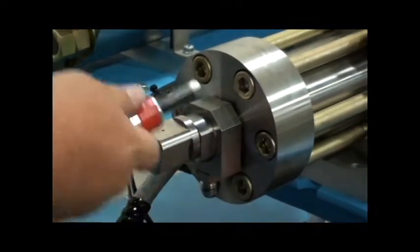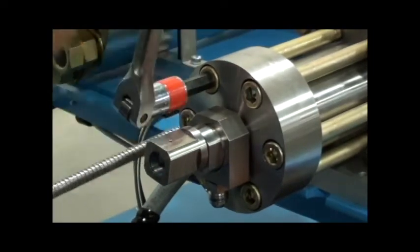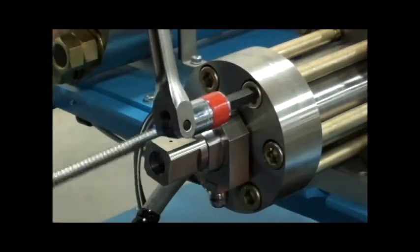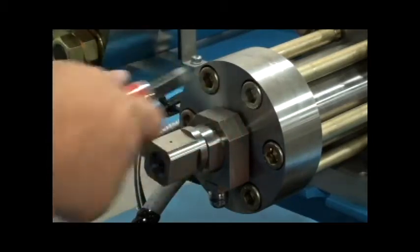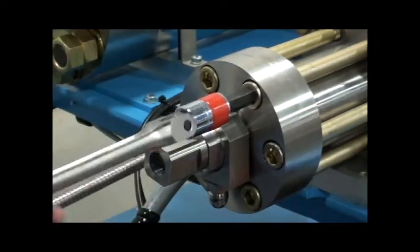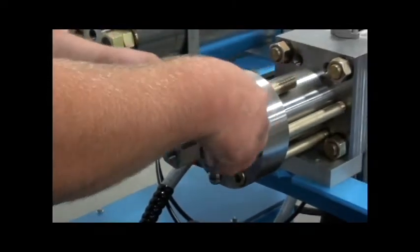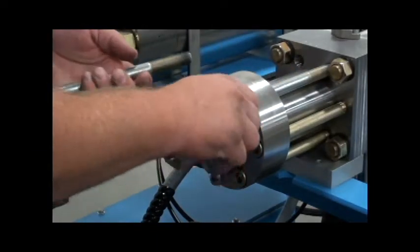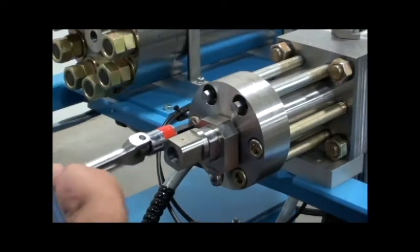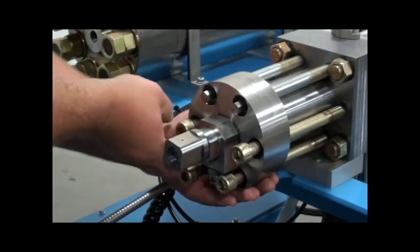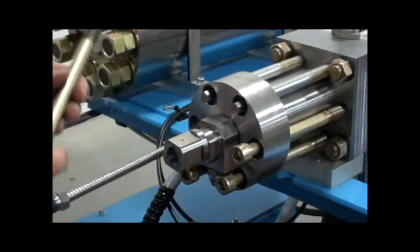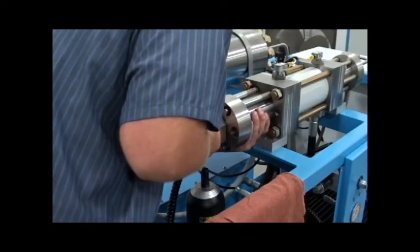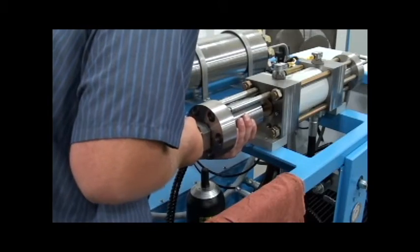Now, loosen the high pressure cylinder cap screws. Remove the two top cap screws and washers. Install two end cap support studs to support the end cap and cylinder assembly. Remove the rest of the cap screws. Make sure you remove the washers. Remove the high pressure end cap and high pressure cylinder and place it on a bench.